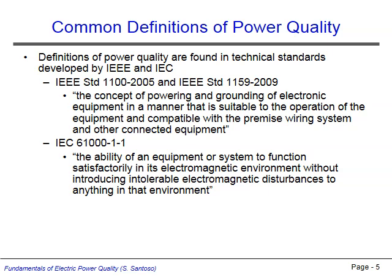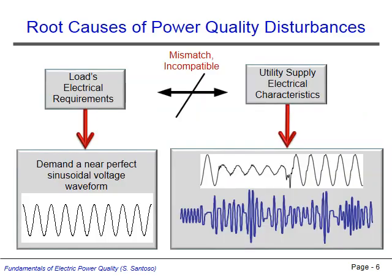IEC, in standard 61000-1-1, defines power quality as the ability of an equipment or system to function satisfactorily in its electromagnetic environment without introducing intolerable electromagnetic disturbances to anything in that environment. Ultimately, all power quality disturbances occur when the voltage waveform supplied to a load by the power system does not match the load's electrical requirements. Usually, loads demand an essentially perfect sinusoidal voltage waveform of a given amplitude and frequency. If the waveform supplied through the power system deviates from this expected waveform, the load will not function properly.